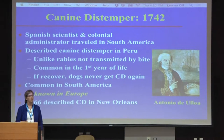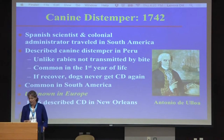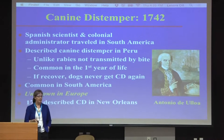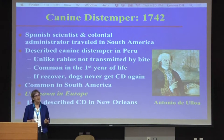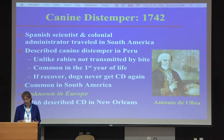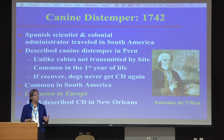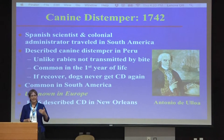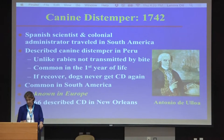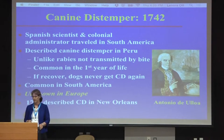Canine distemper was first described in 1742 by a Spanish scientist and colonial administrator traveling in Peru. He made interesting observations: canine distemper could present with neurological signs different from rabies; it was commonly seen in puppies in their first year of life, but if the dogs recovered, they never got it again. He mentioned it was common in South America but unknown in Europe, and he also described an epidemic in New Orleans in 1766.